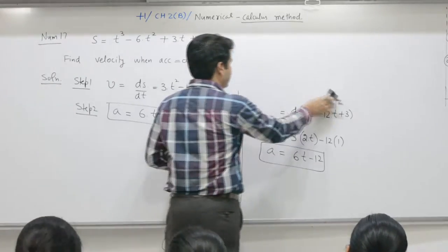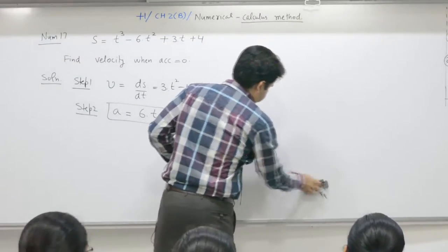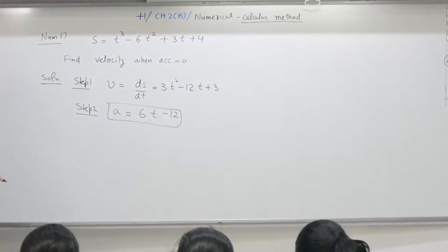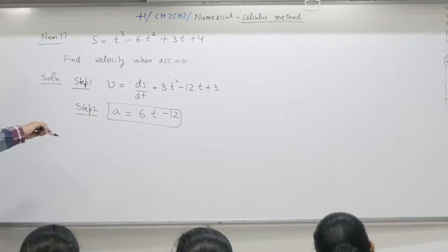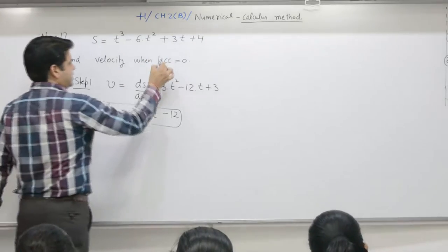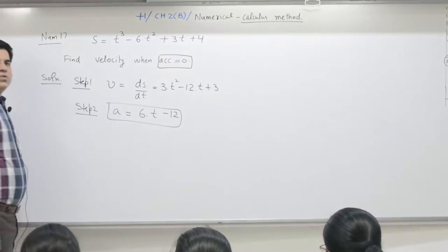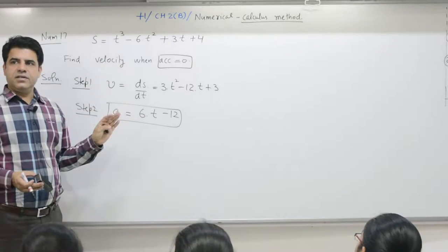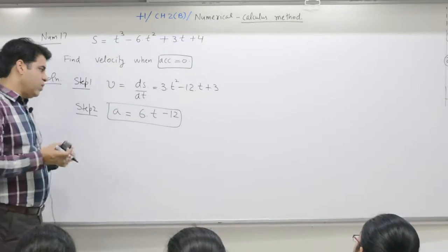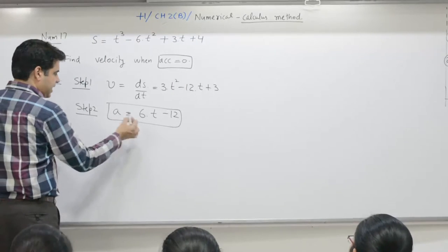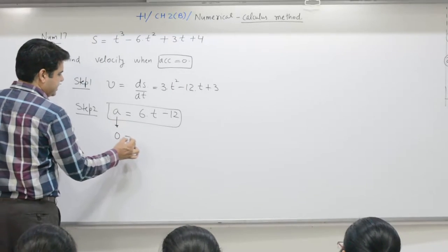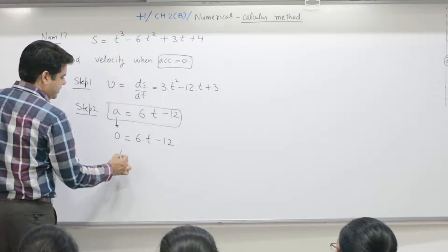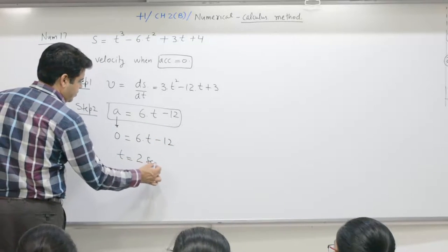Go through the question again — what do you want? Velocity when acceleration is 0. The examiner is not giving you a specific time like 2, 3, or 4 seconds; the condition is acceleration = 0. So we find the time when acceleration is 0, which gives t = 2 seconds.